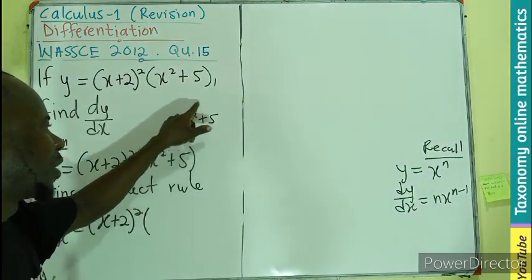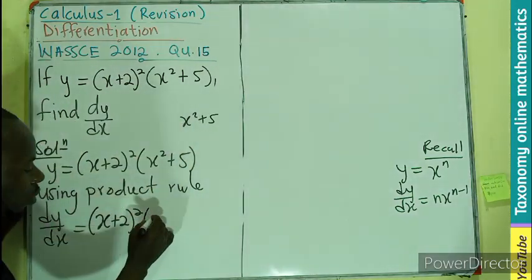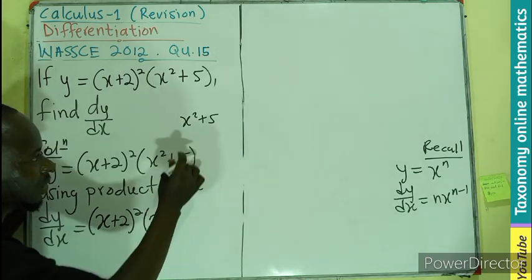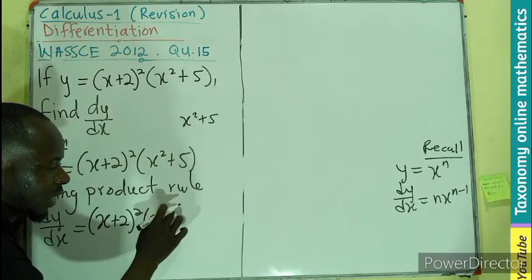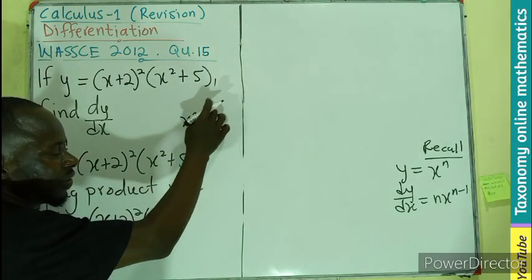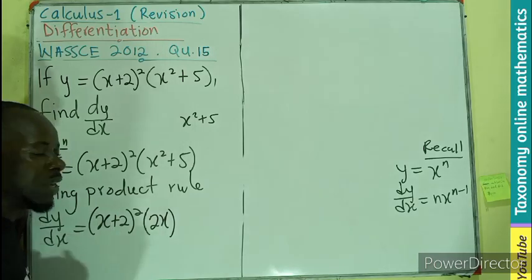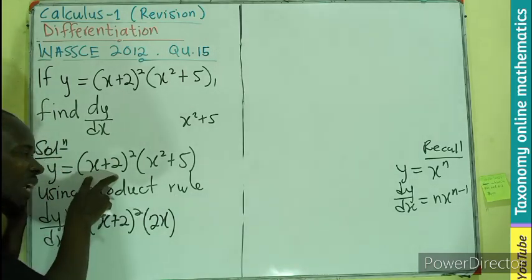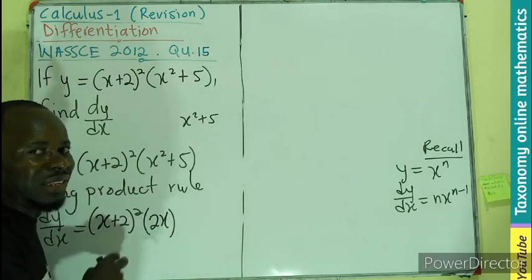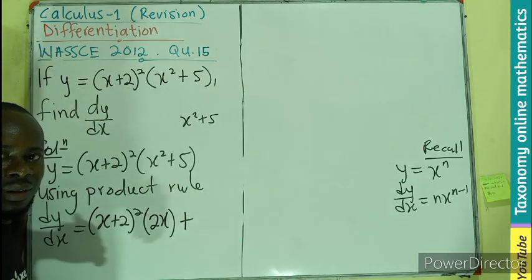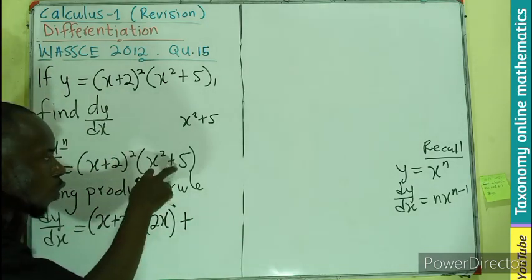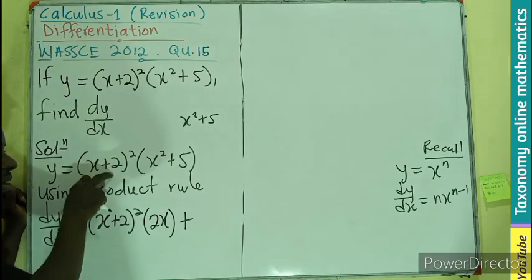Then we subtract 1 from the power or we reduce the power by 1. So if that is the case, same is going to happen here. 2 is coming forward to multiply, to give us 2x. 2x squared minus 1 will give you 1. The 1 is there. If we differentiate any constant, you get 0. So this is what we are going to have. Hold the first term, differentiate the second term. Good. Then, plus.